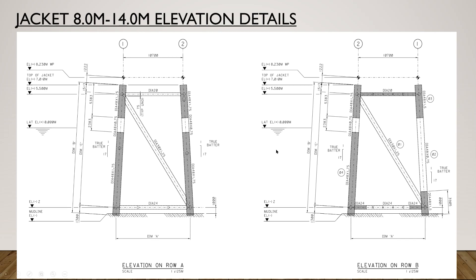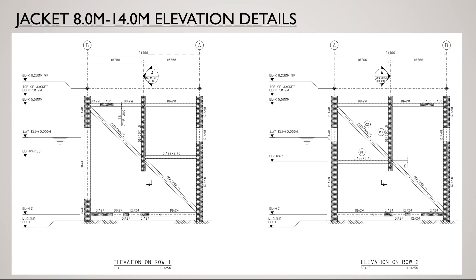These are two different views of the same 8 to 14 meter elevation jacket. The main important detail is that the first horizontal bracing connection is 1 meter from the mud line. The second type of jacket for this depth range has straight horizontal and vertical legs and bracings. The mud line is at the bottom, the first bracing is 1 meter from the mud line, LAT is 0.0, the first bracing above is 5.5 m, top of jacket is 7 m, and work point elevation is 8.23 m.